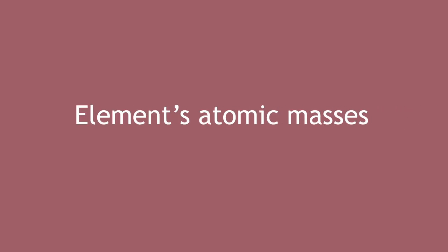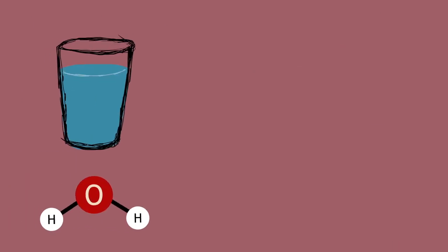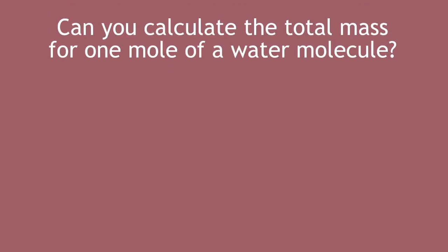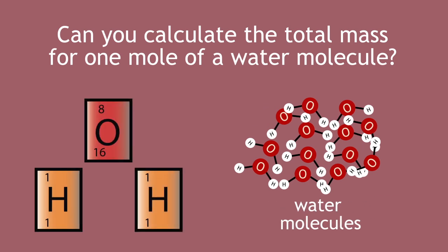All of the elements' atomic masses can be found using the periodic table. So, for water, you use the atomic masses for hydrogen and oxygen. Can you calculate the total mass for one mole of a water molecule? Pause and continue when you're ready.